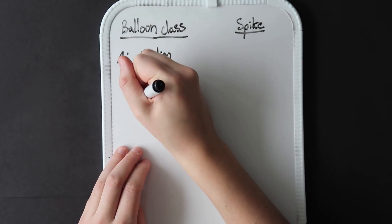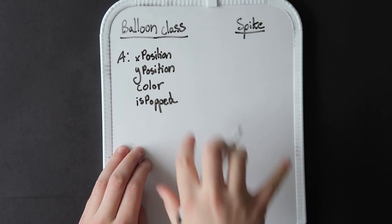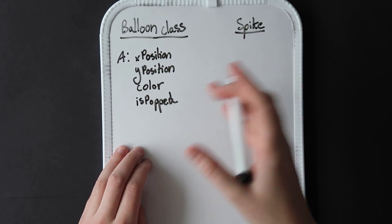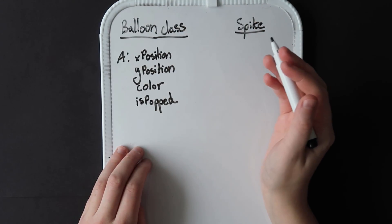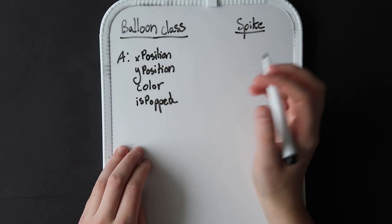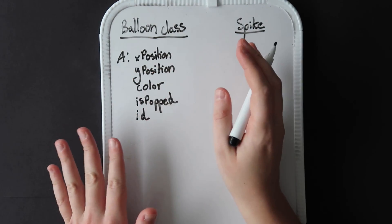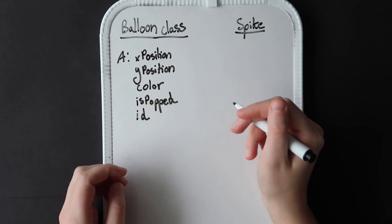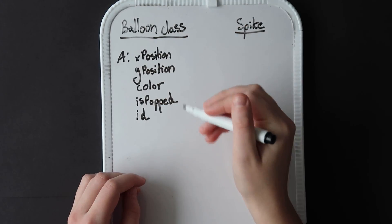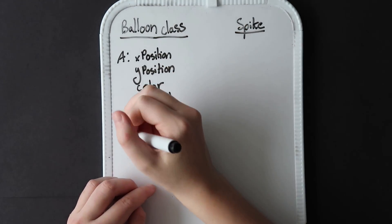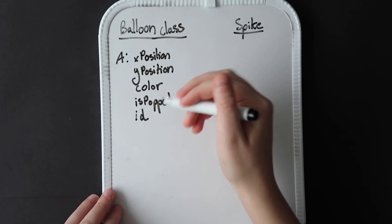We also might want to keep track of if that balloon is popped by the spike. Balloons are falling down the screen, you have this spike as your player and controller, you're trying to pop these balloons, so we want to keep track of if they have been popped. We'll also give each balloon an ID, because we're going to have a bunch of balloons on the screen and we'll want to keep track of them. Those are all the data pieces we want to track for each individual balloon — each balloon will have different values for each of these attributes.